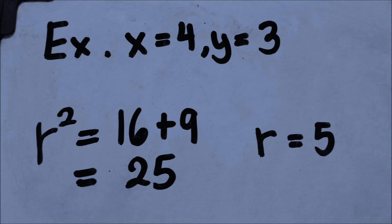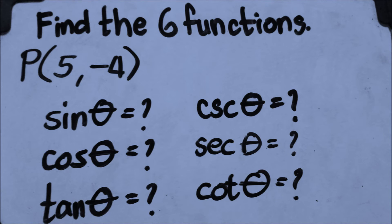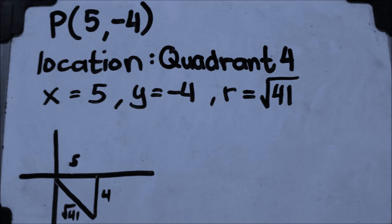It's time for an example. Find the 6 functions where the coordinate given is (5, negative 4). The location of the angle is in quadrant 4 because the x value which is 5 is positive and the y value which is negative 4 is negative. We know that when it is positive x and negative y, the location of the angle is in quadrant 4. Then x equals 5, y equals negative 4, and r equals the square root of 41.